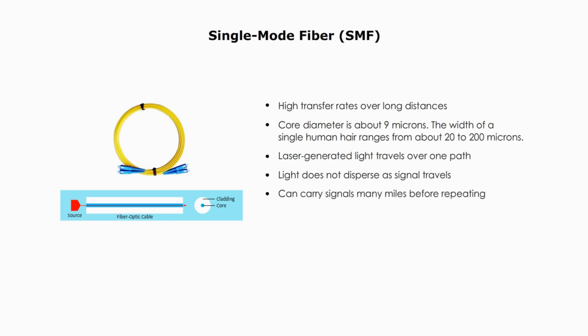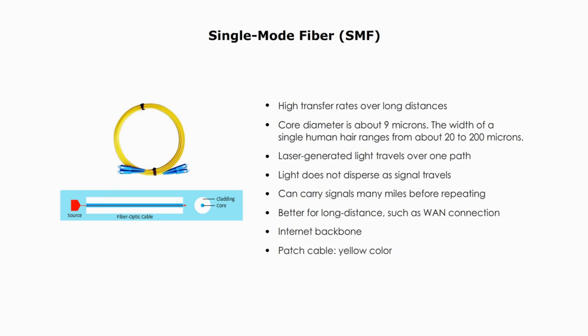Since single-mode fiber can carry signals many miles before repeating, that's why it's better for long distances, such as WAN connections. Internet backbone uses single-mode fiber. If you see a patch cable with yellow color, it is single-mode fiber.